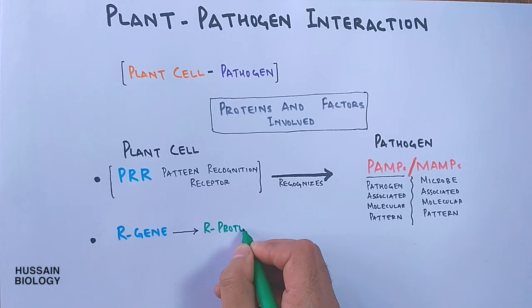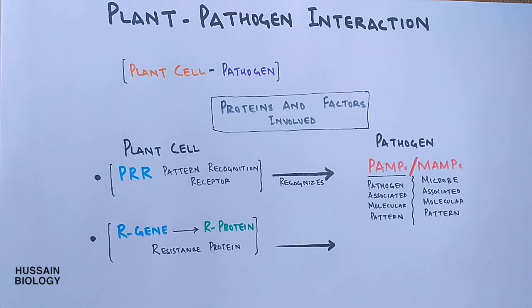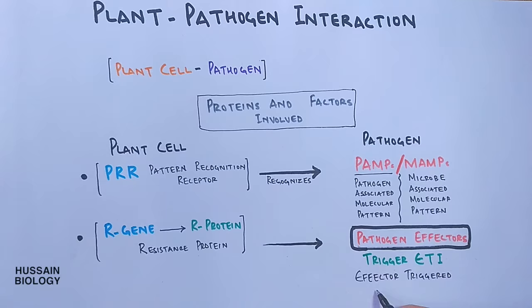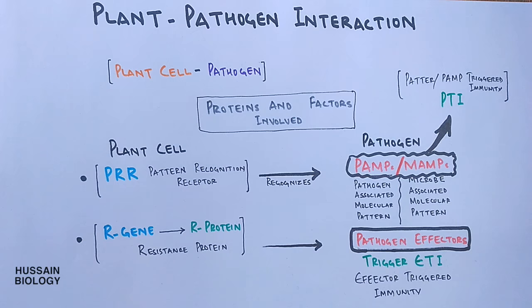The plant cell has R genes which express R proteins, termed resistance proteins, and pathogens have effector molecules called pathogen effectors, which are detected by R proteins in the plant cell. In plant immunity, we come across two types of immunity: one is ETI, that's effector-triggered immunity, and the other is PTI, that's pattern or PAMP-triggered immunity. Pathogen effectors evoke ETI, while PAMP or MAMP evokes PTI. Now let's get into the detail of plant-pathogen interaction.